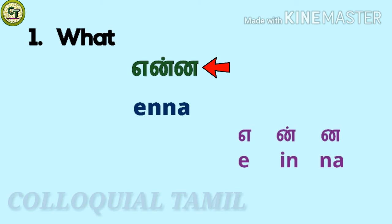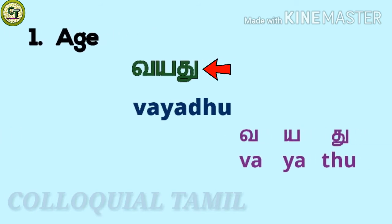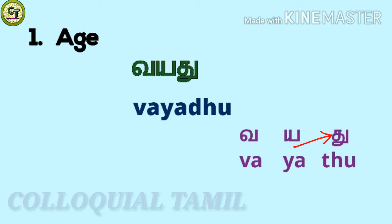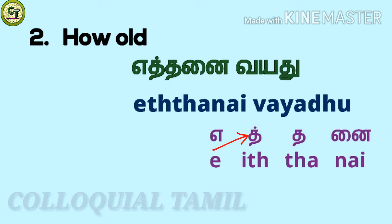Let's go to our next word. Age in Tamil is 'vayadu'. V, a short sound letter, a short sound letter, to a short sound letter. While speaking, 'to' may also sound as 'du' in some words. Together: vayadu. How old in Tamil is 'ethanai vayadu'. You already know 'vayadu'.